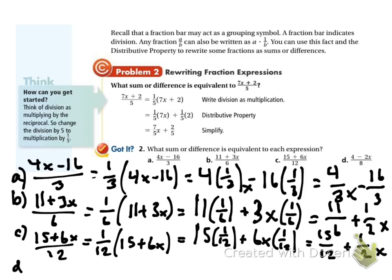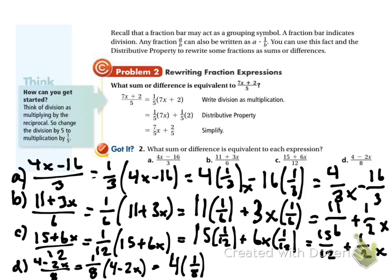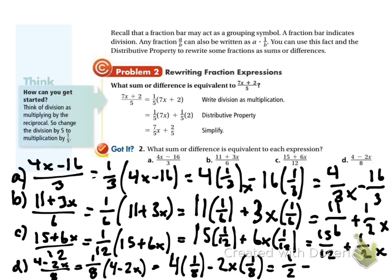Problem d is (4 minus 2x) over 8. So I pull the 1/8 out front times (4 minus 2x), then distribute that 1/8. That gives me 4/8 minus 2/8 x. 4/8 is 1/2, and 2/8 is 1/4, so I rewrite that as 1/2 minus 1/4 x.